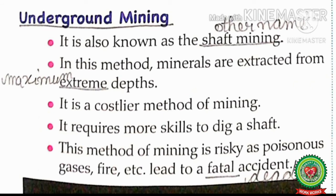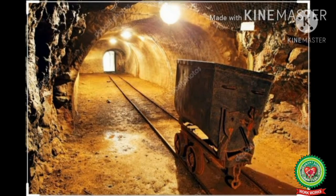The next type of mining is underground mining — meaning mining done at extreme depth of the earth. It is also known as shaft mining. In this method, minerals are extracted from extreme — meaning maximum — depths. It is a costlier method of mining and requires more skills to dig a shaft. This method is risky as poisonous gases, fire, etc. can lead to fatal — meaning deadly — accidents. Underground mining is used to extract minerals from below the surface of the earth.